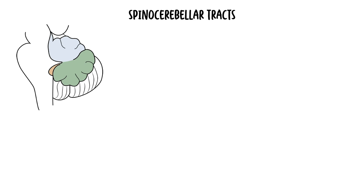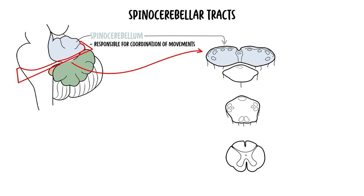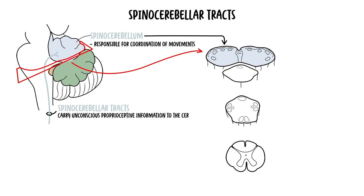Now let's focus on the spinocerebellum, specifically the spinocerebellar tracts, because clinically this is very important. The cerebellum is able to help coordinate and refine movements due to the spinocerebellar tracts. These tracts carry unconscious proprioceptive information — such as information from muscle spindles, Golgi tendon organs and joint capsules — all the way to the cerebellum.